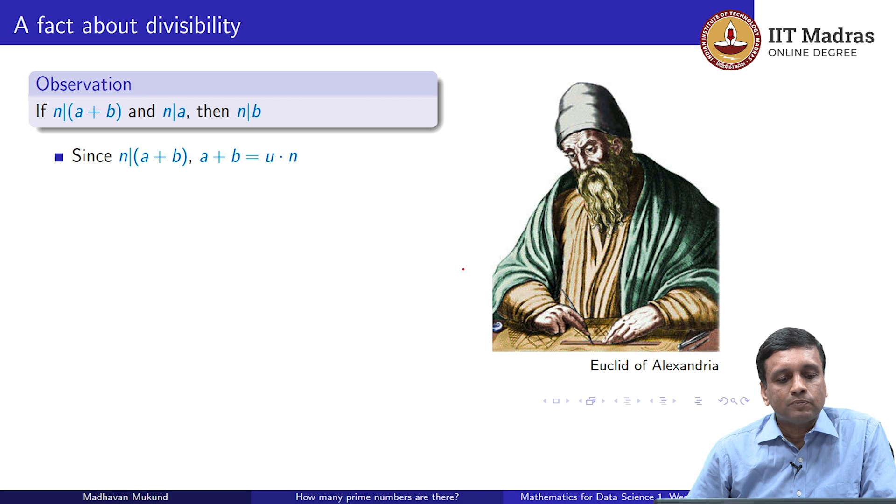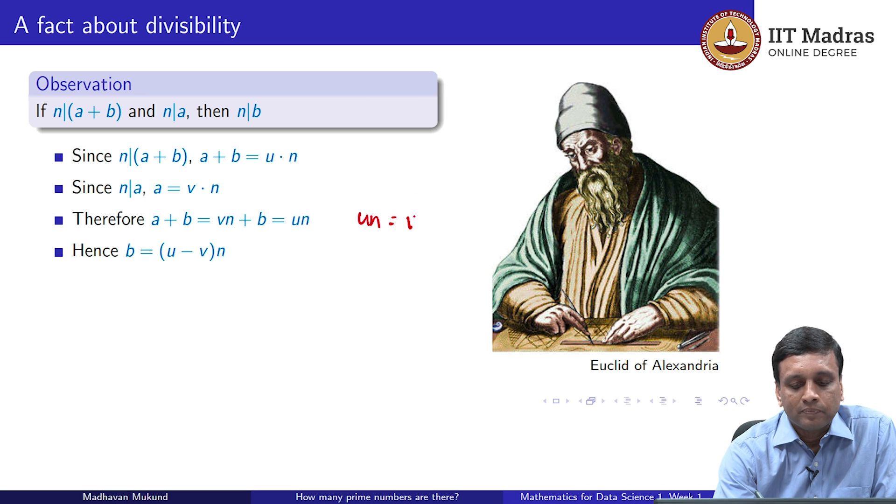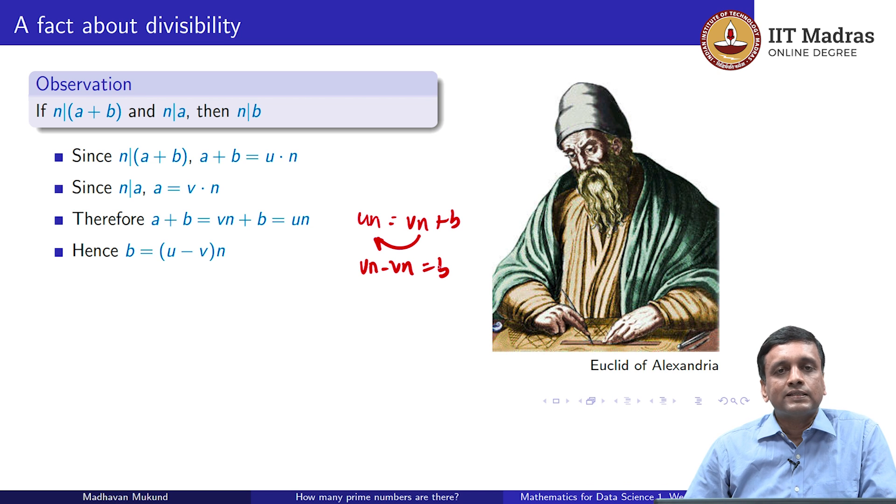Since n divides the sum a plus b, a plus b can be written as a multiple of n, u times n. Similarly, since we have assumed that n divides a, a can also be written as a multiple of n, v times n. What we are told is that a plus b is u times n for some u, a itself is v times n for some v. The question is, is b also some multiple of n, does n divide b? Because of what we have just discussed, a plus b can be written as vn plus b, because a is vn. And the sum vn plus b, which is the same as a plus b, is in fact un. Now we can do some simple rearrangement. We can take un equals vn plus b, and just take the vn to the other side and we get un minus vn equals b. And so, b is u minus v times n. This simply proves to us that if a number divides the sum and it divides one part of that sum, it also must divide the other part of the sum. We will use this to show Euclid's result.